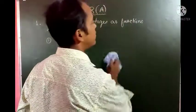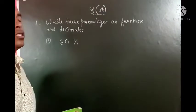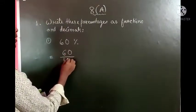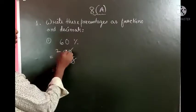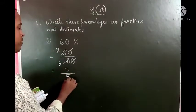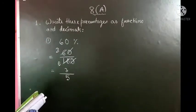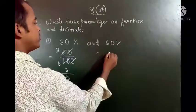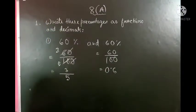So let us start. The first question is: write this percentage as a fraction and decimal. So we write 60 divided by 100 and remove the percentage sign. Simplifying: 2 and 5 cancel to give 3 by 5, so this is the fractional form. And 60 divided by 100 equals 0.6, so this is the decimal form.